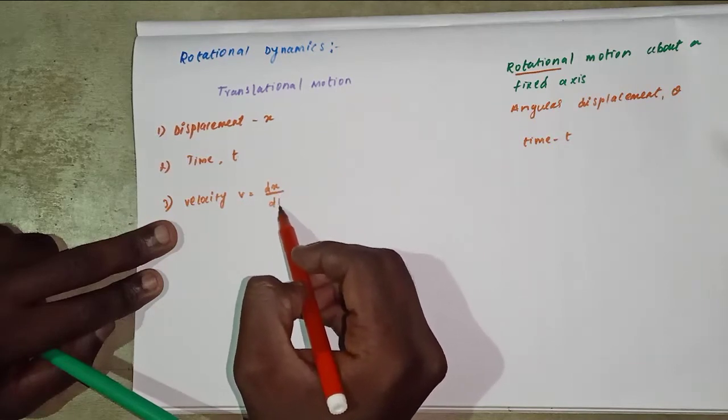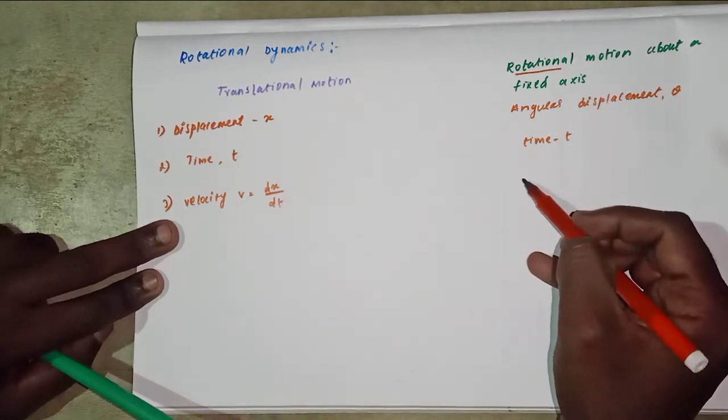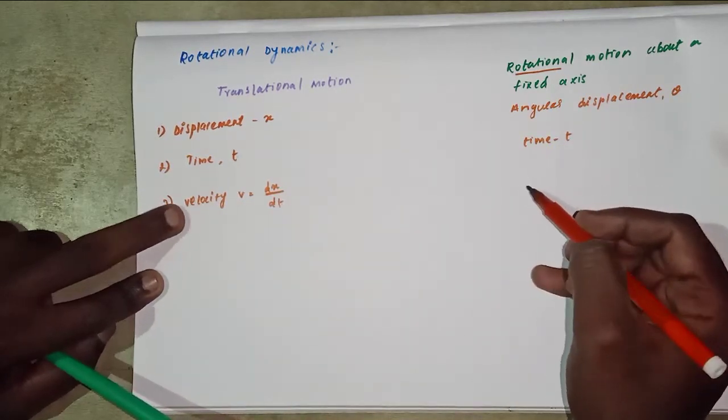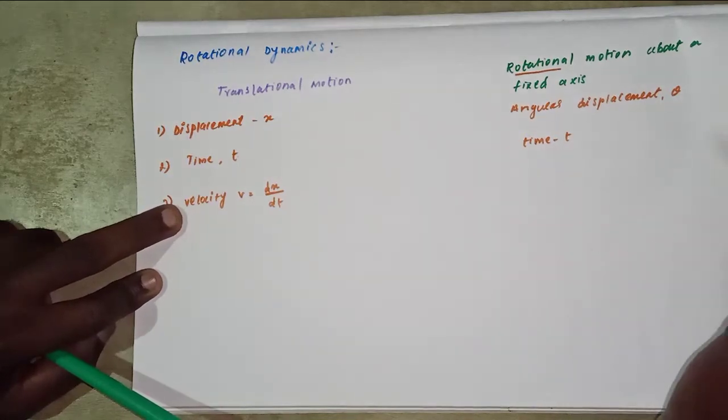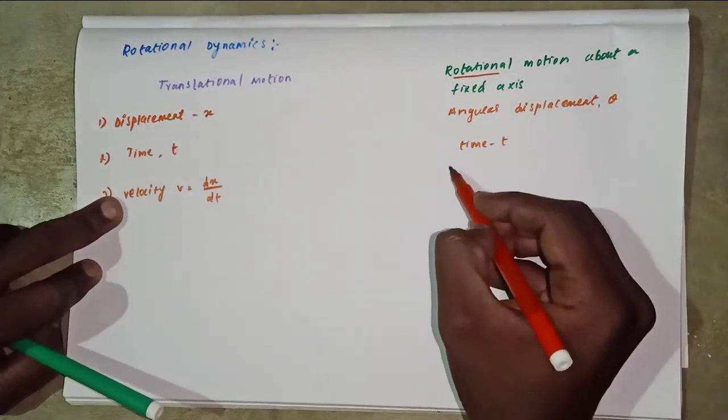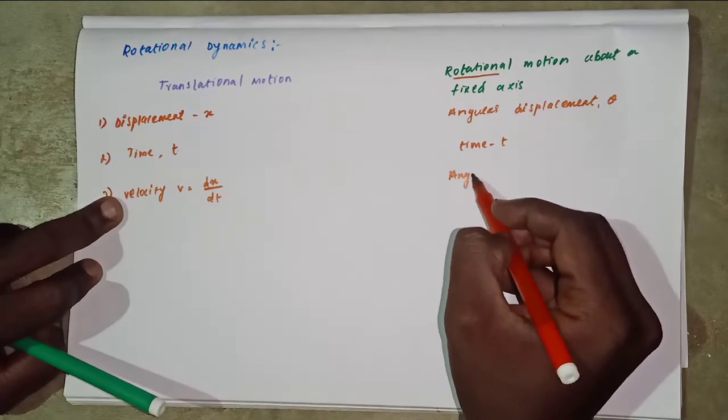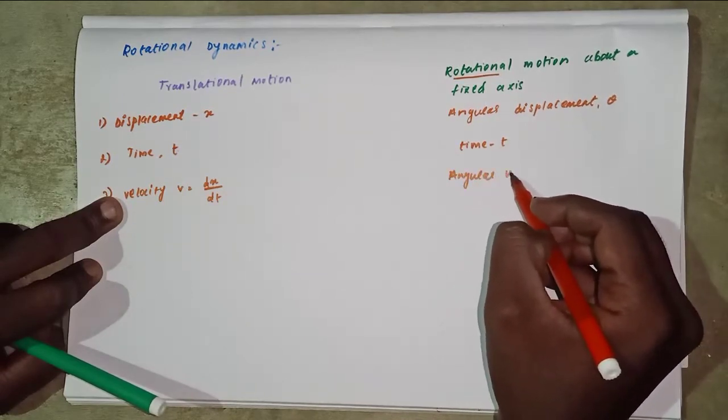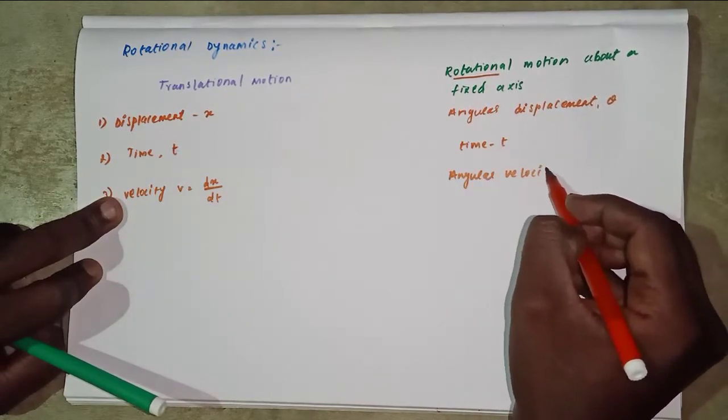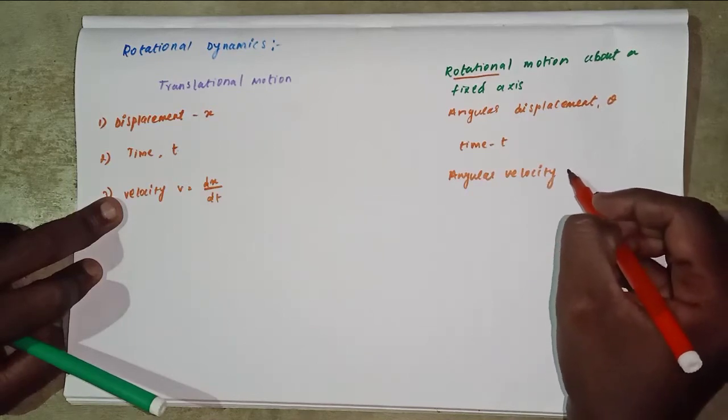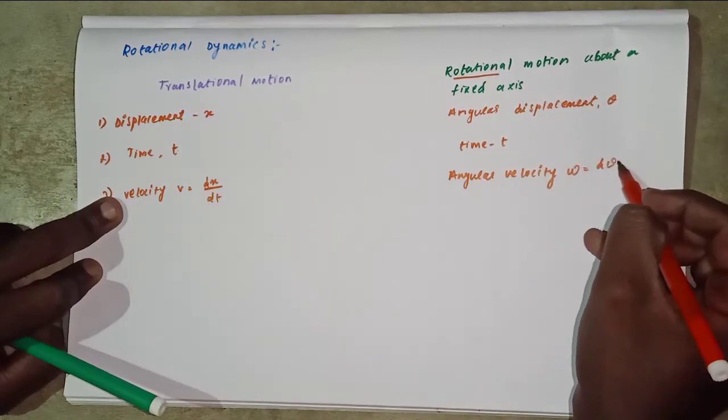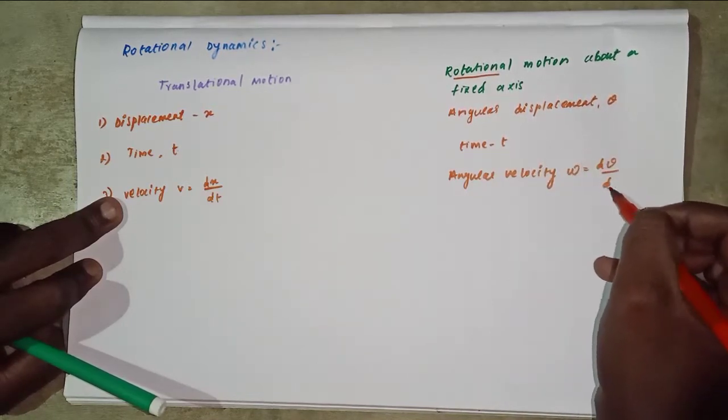That is called velocity. Here is angular velocity. Linear velocity, that is dx/dt. Angular velocity omega, d theta divided by dt.